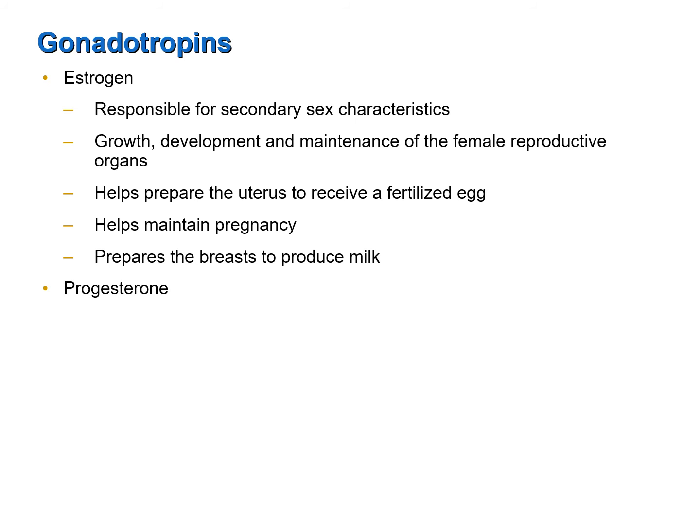Progesterone, which is released by the corpus luteum, works with estrogen to prepare the breast to produce milk and to maintain pregnancy. In addition, progesterone also helps bring about the menstrual cycle. Both estrogen and progesterone are steroid hormones.